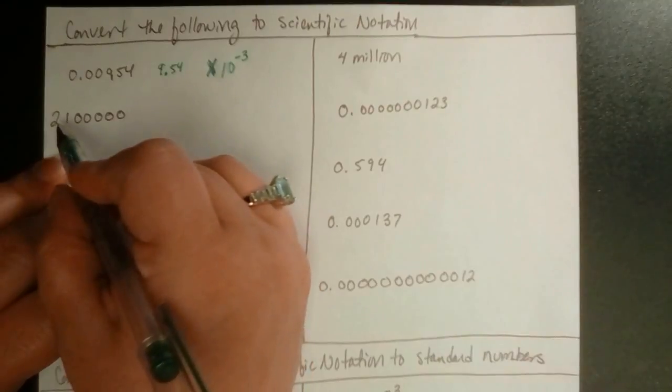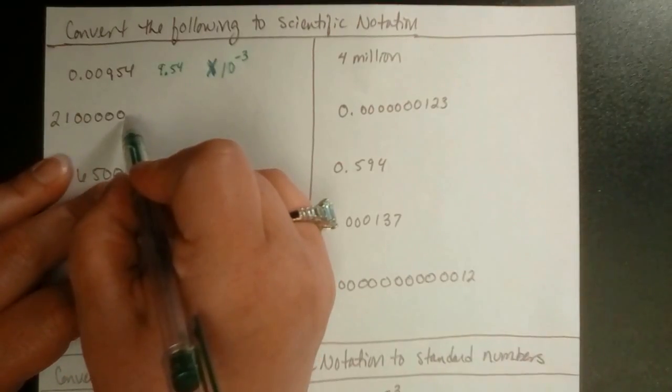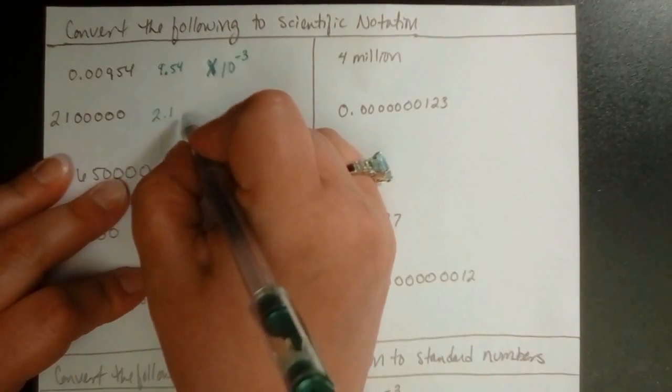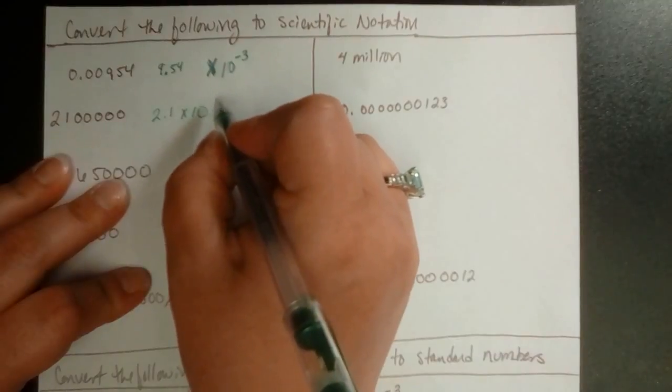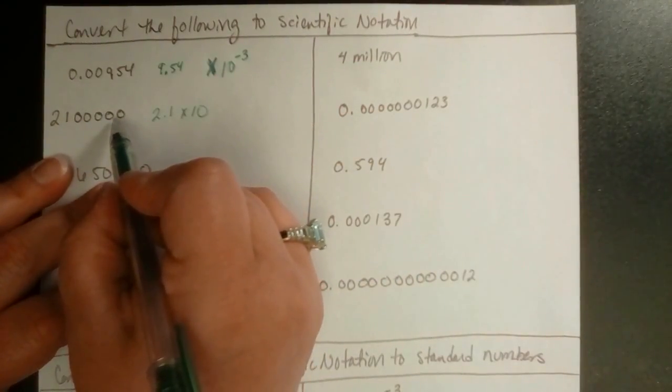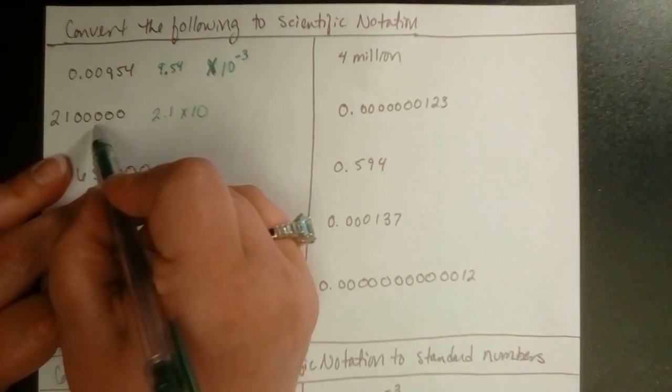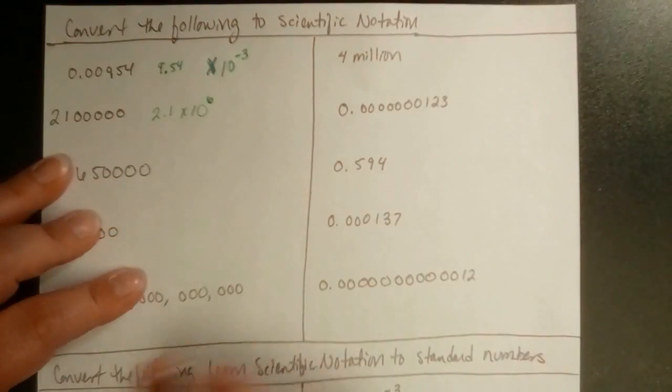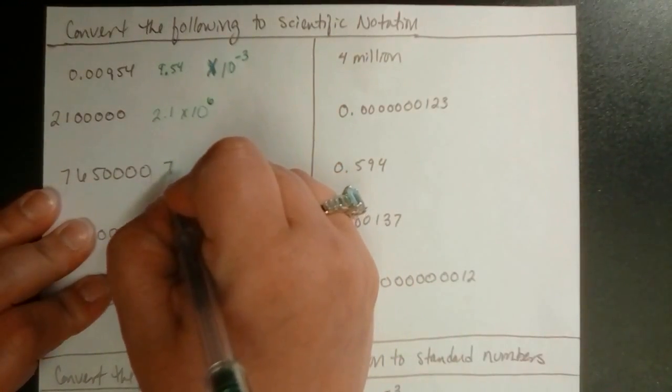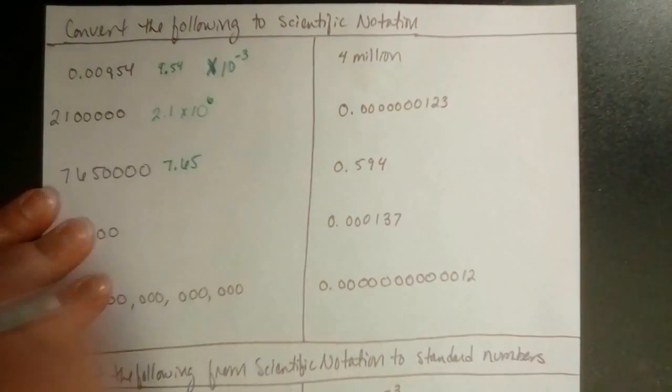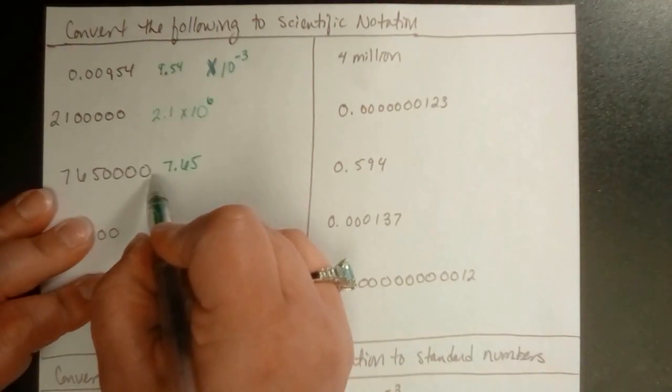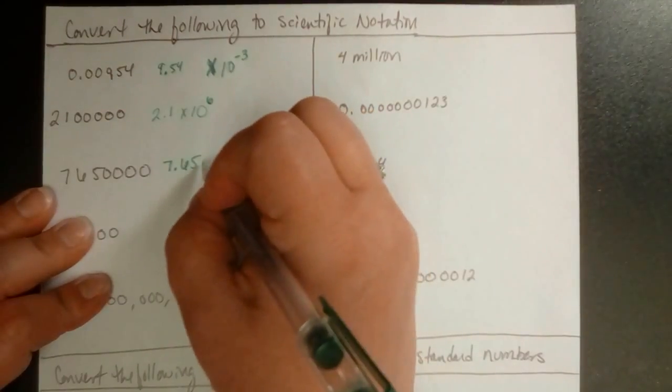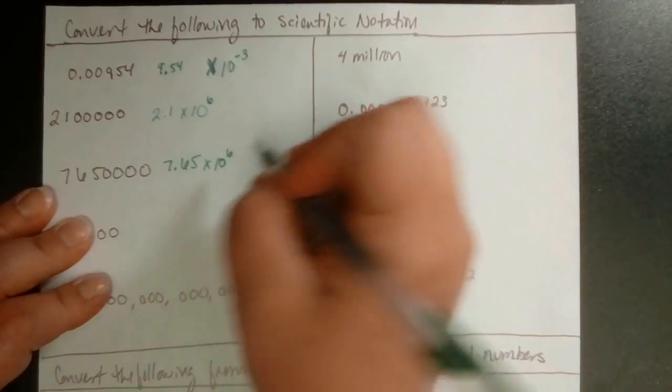Now, we're going to move this instead to the left. Here's my decimal point here. I want it to be after that 2. So, it'll be 2.1 times 10 to the, it's going to be a positive. We'll have to figure out how much. We're going to move it now 1, 2, 3, 4, 5, 6 times 10 to the 6th. We're going to have 7.65 here. Let's move it to the left. That'll make it a positive. 1, 2, 3, 4, 5, 6 times 10 to the 6th. That's how you do that.